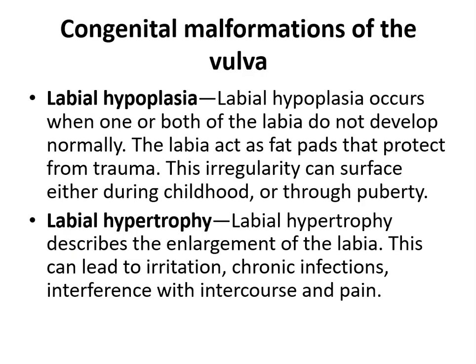The second condition is labial hypertrophy. Labial hypertrophy describes the enlargement of the labia — the labia are very larger or enlarged than normal. This can lead to irritation, chronic infections, interference with intercourse, and pain at the time of intercourse. So these are the two abnormalities of the vulva: labial hypoplasia and labial hypertrophy.